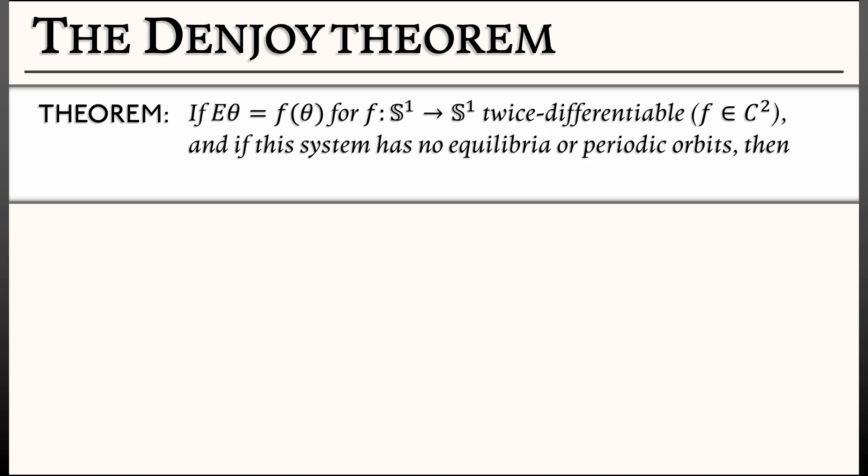But this is a nonlinear system that we're talking about. Aha! The Denjoy theorem says that if you have this nonlinear system—no equilibria, no periodic orbits—then it is topologically conjugate to a rigid irrational rotation,